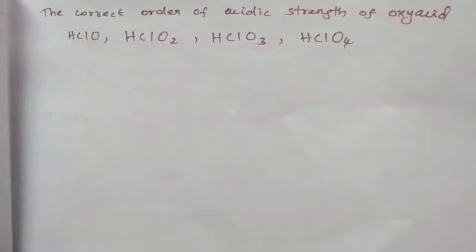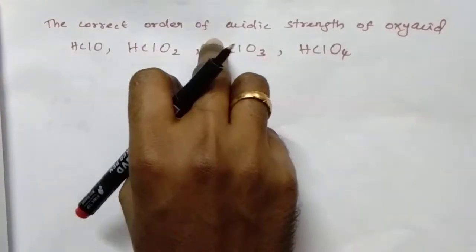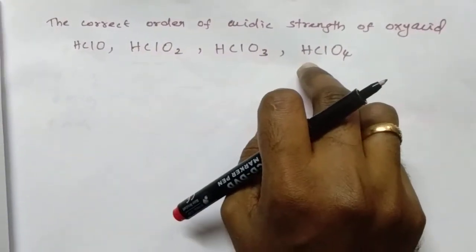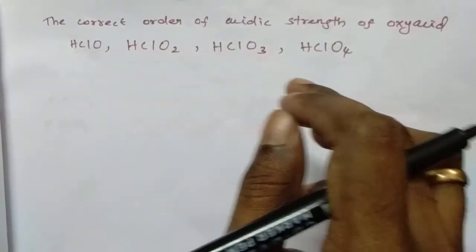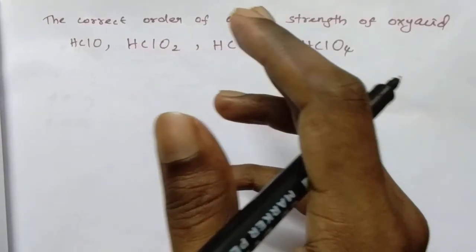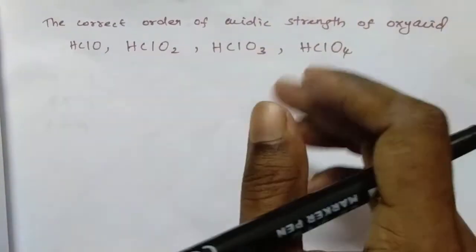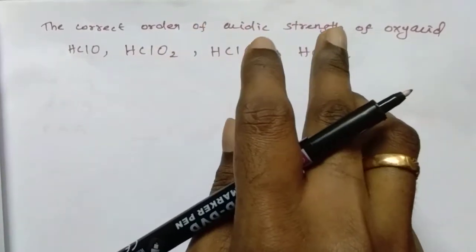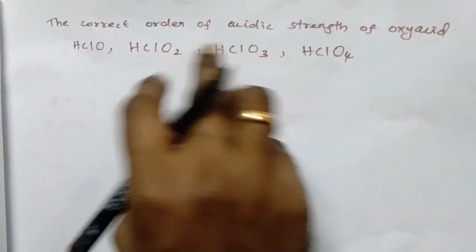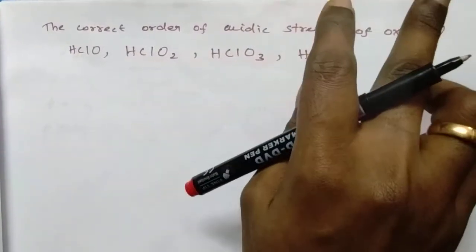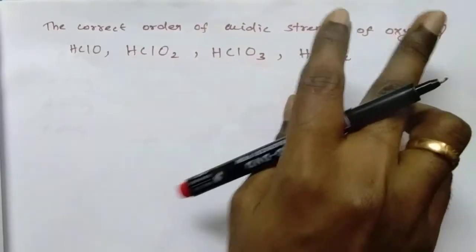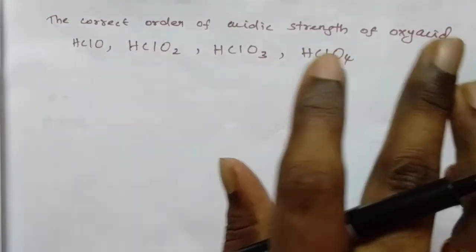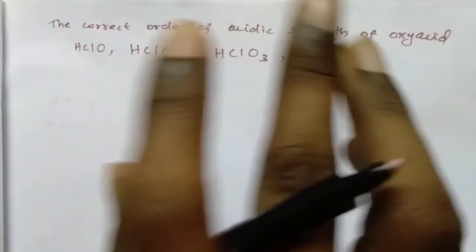I will show one more question. The correct order of acidic strength of oxy acids: HClO, HClO2, HClO3, HClO4. How can you answer this question? If you watched my previous video on bond order for polyatomic molecules, you can answer with that trick. If you are new to this video, please watch that video. At the end of our lesson, I will show these two questions with today's trick.